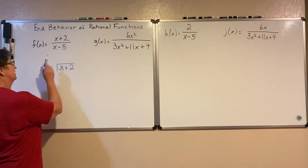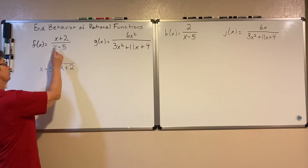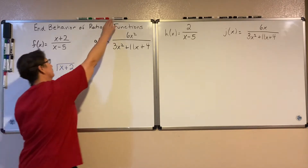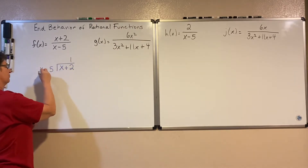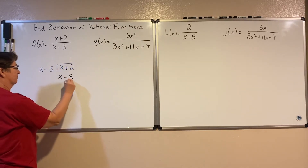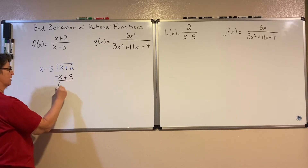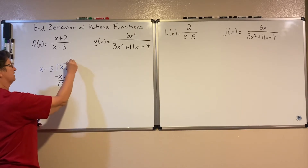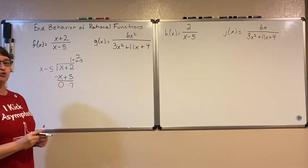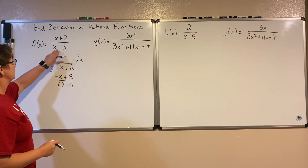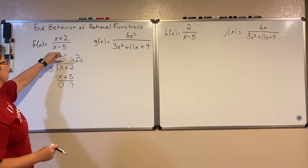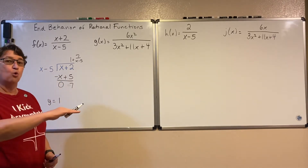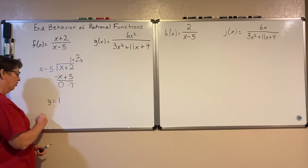For instance, here I have my divisor divided by my dividend. I'm going to divide: x goes into x one time. If I were to multiply one times this, notice when I subtract those, that becomes zero. Now I have a remainder — that plus 7 over x minus 5 — but we're not going to worry about the remainder. What this tells me is this particular rational function is going to approach y equals 1.